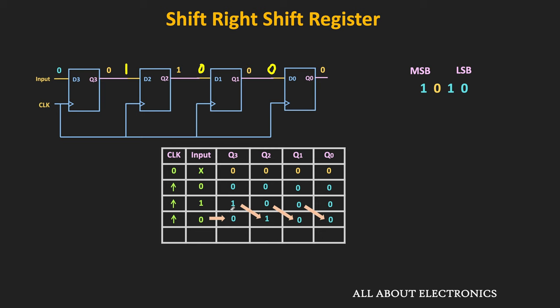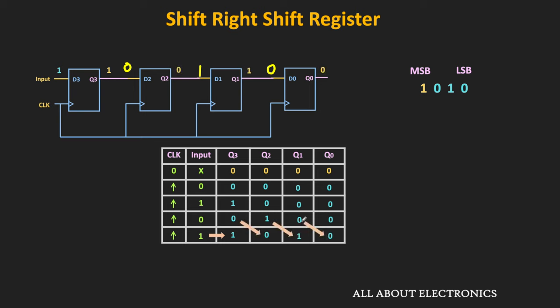Finally, the data to shift into the register is 1, so the same 1 is applied to the input just before the next clock pulse. The inputs for the remaining 3 flip-flops are 0, 1, and 0 — that is the output of the previous stage. At the clock pulse, all 4 flip-flops respond, and the output of d3 becomes 1, while d2, d1, d0 become 0, 1, and 0. After 4 clock pulses, the data 1010 is fully shifted into the register, with data moving from left to right — this is why it is called the shift-right type of SISO register.